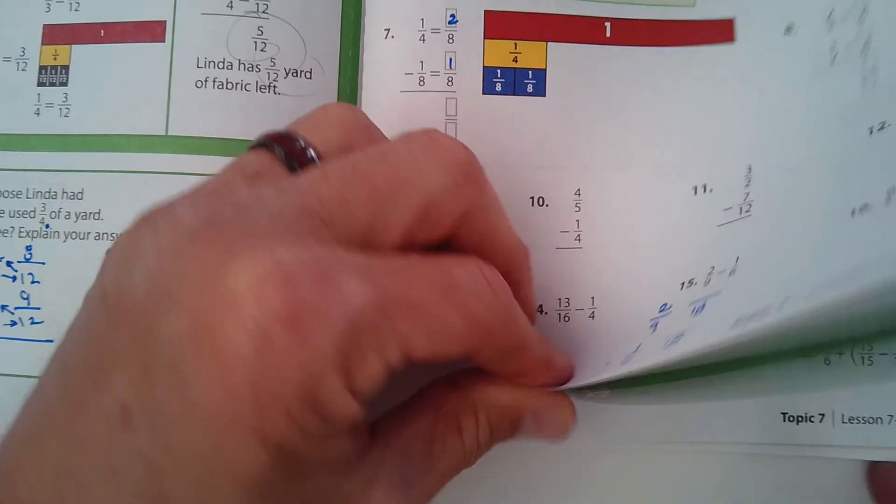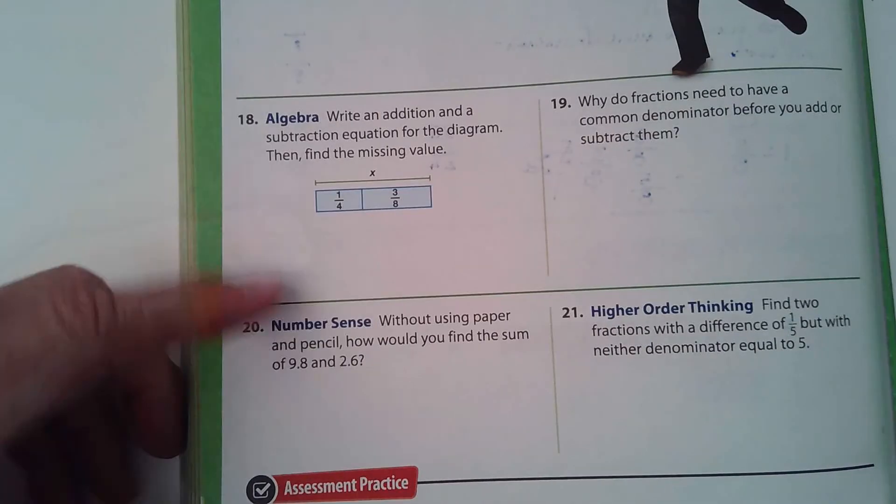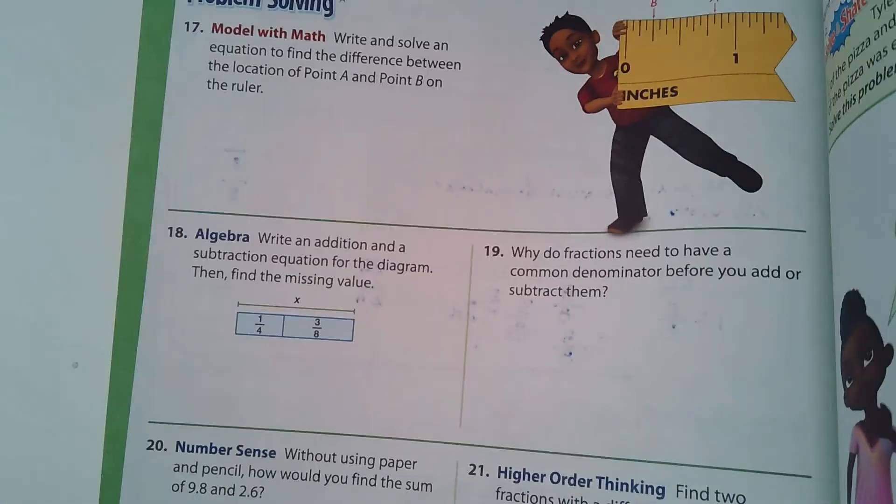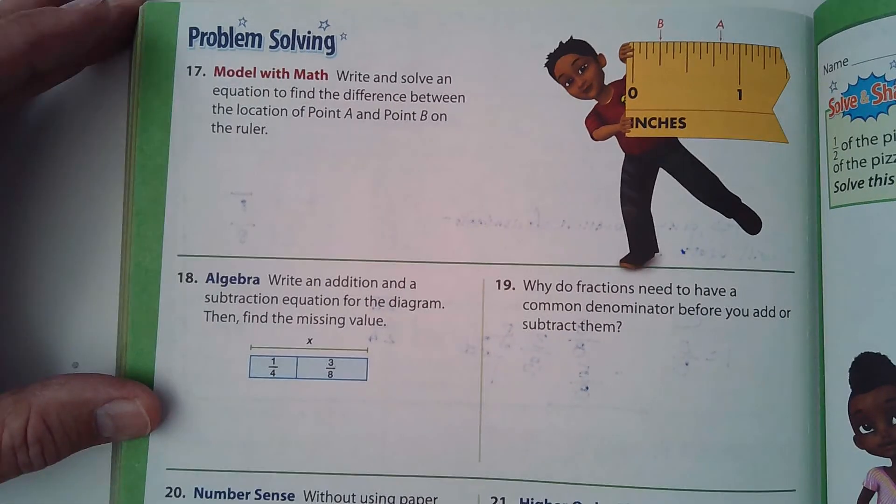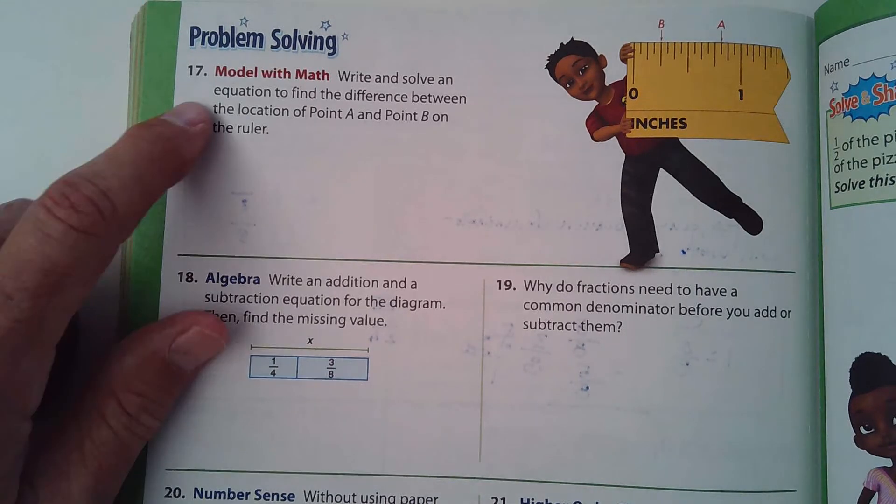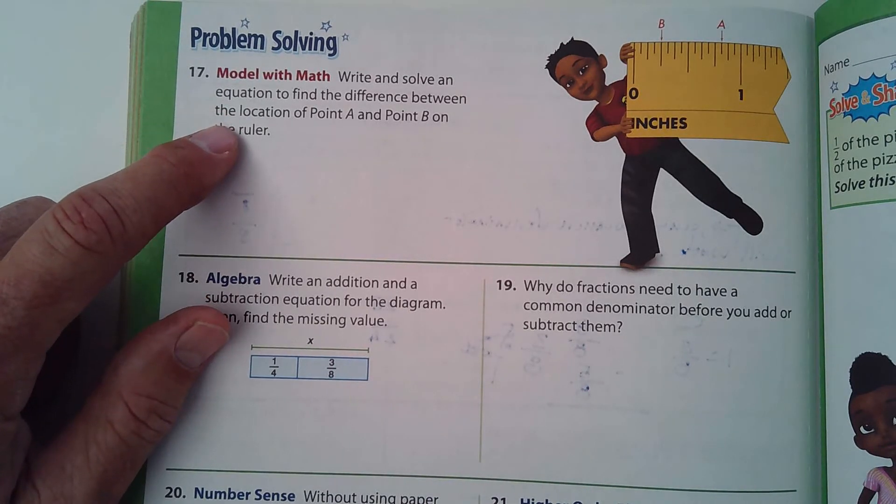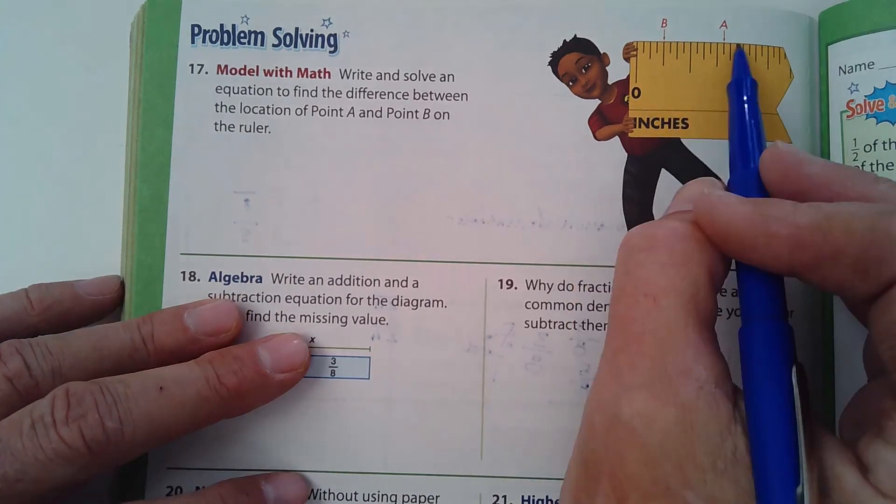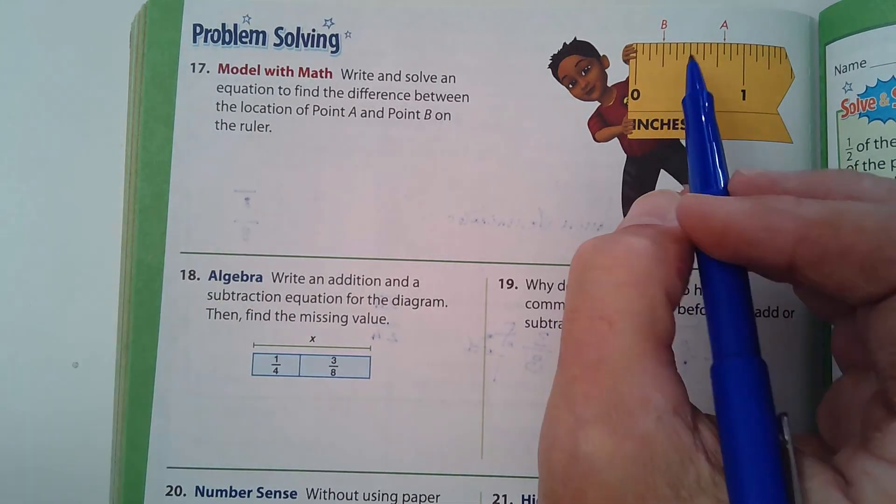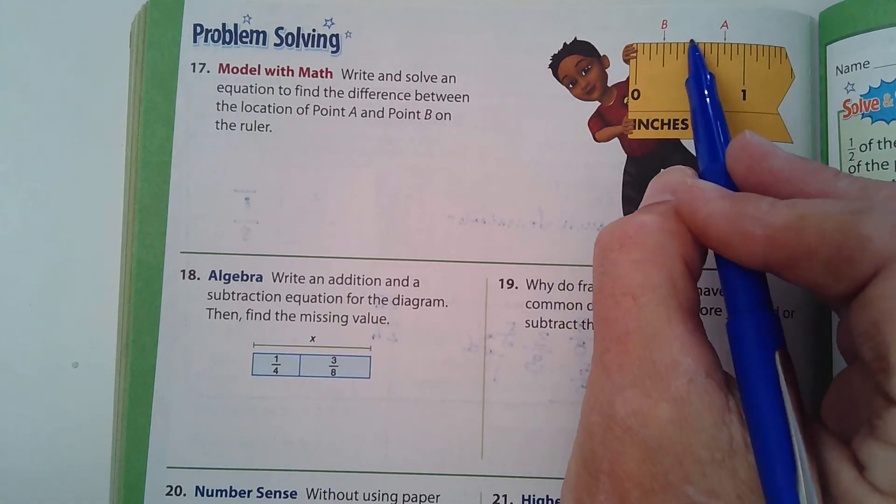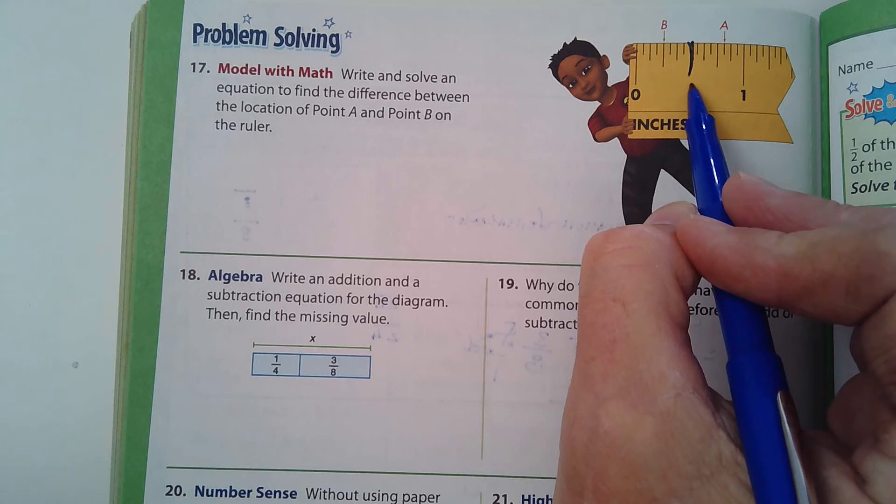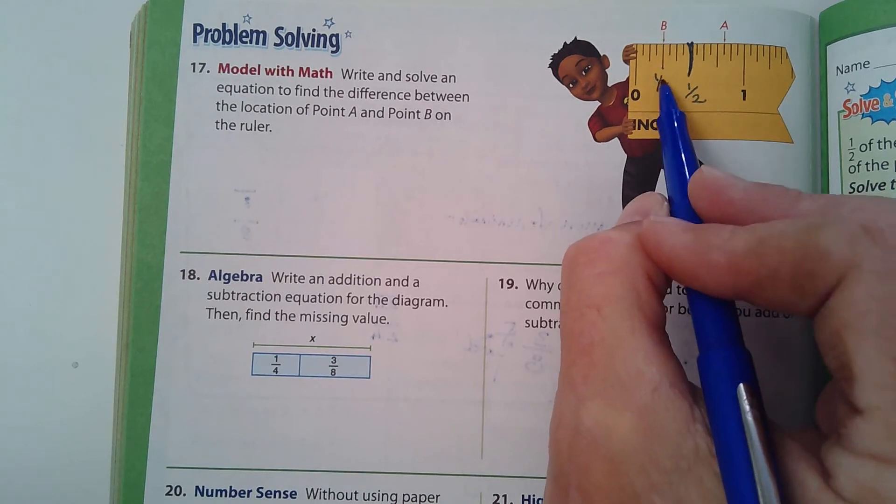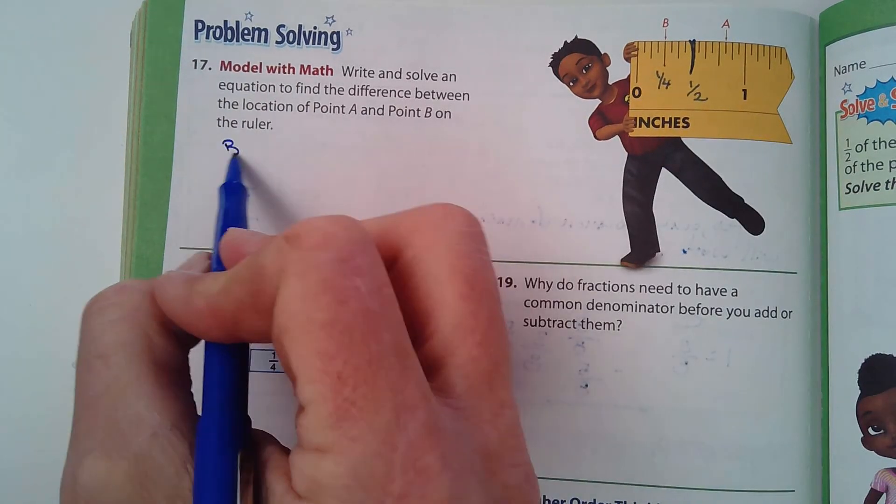Let's look at the last page. I'm trying to arrange this on my document camera here so you guys can see. So it says write and solve an equation to find the difference between the location of point A and point B on the ruler. So the difference between point A and point B. So can you guys read a ruler?